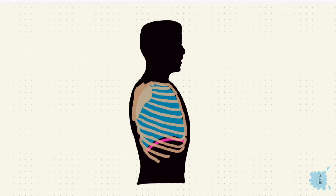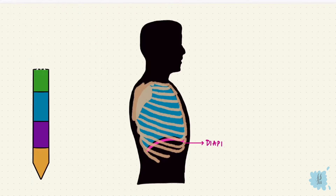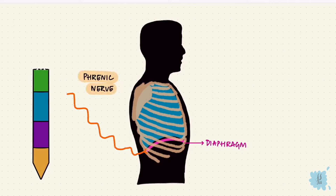The nerve supply to these muscles is important, particularly the diaphragm. The diaphragm is supplied by the phrenic nerve, which originates from C3, C4, and C5. If there's damage to this nerve, there can be diaphragmatic palsy, which makes it difficult to breathe.